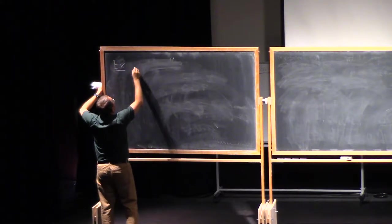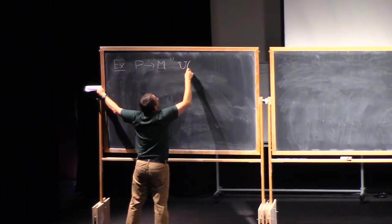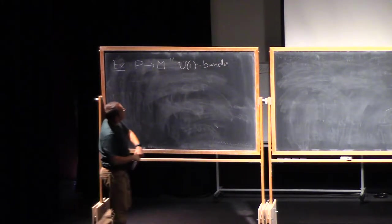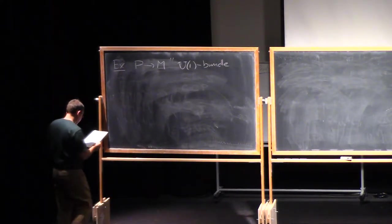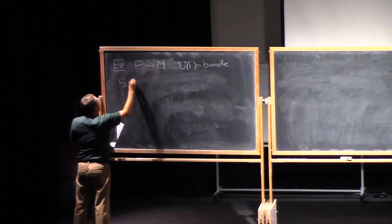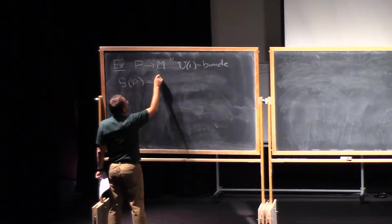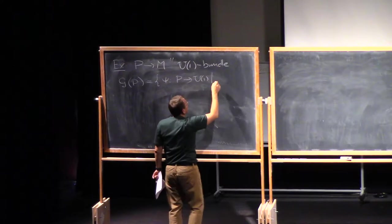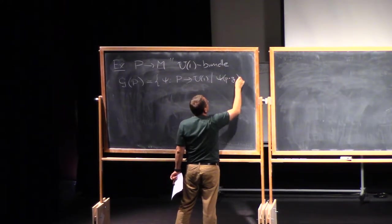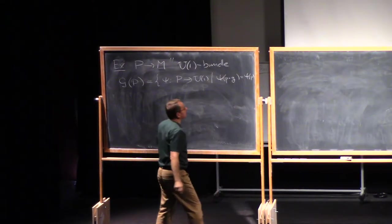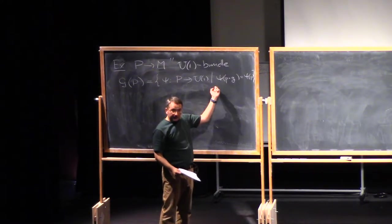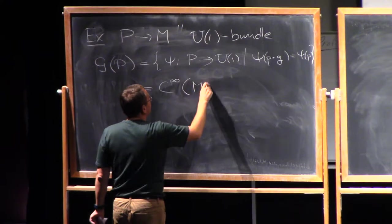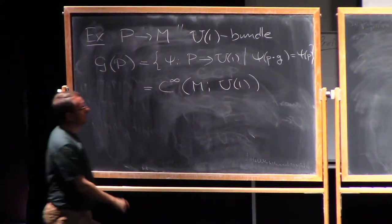So here is an example. Let me assume that P over M is a principal U(1) bundle. So a particular feature is that U(1) is an abelian group. So what we have is the following. The gauge group of P, as we have discussed earlier, is just a set of maps psi from P to U(1) such that, in this case, psi of P times G is just psi of P. In other words, psi is an invariant map with respect to the U(1) action. That is, this is just the same as the space of maps from the base manifold into U(1).